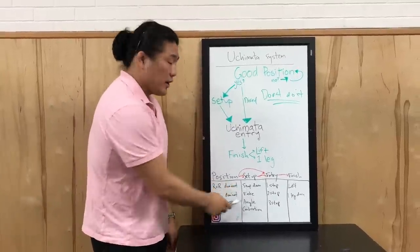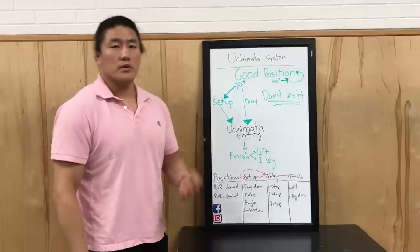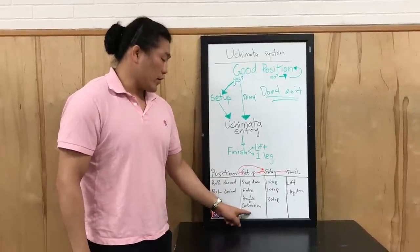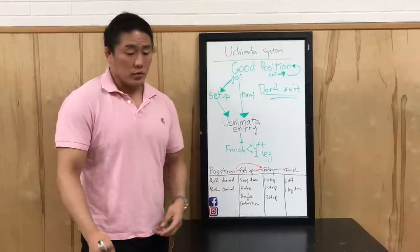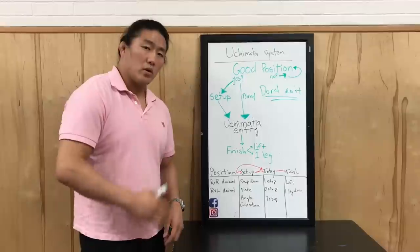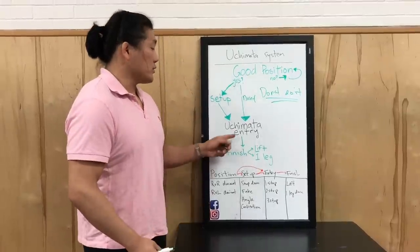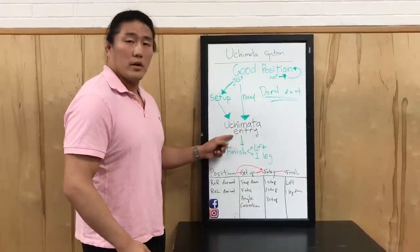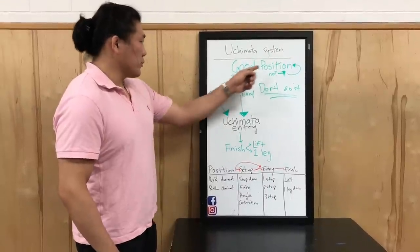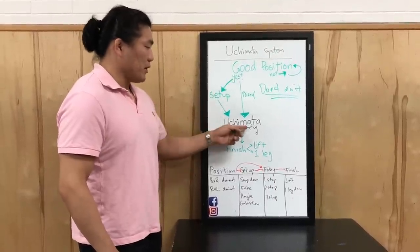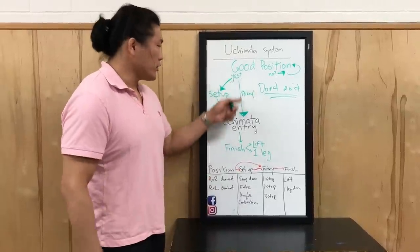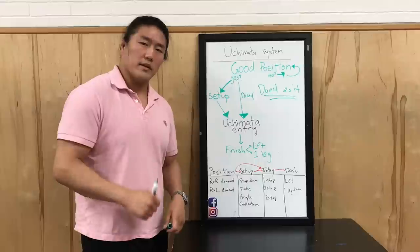There are different types of setups. I like to classify my setups in three ways: snap down, fake, and creating an angle. You could also do a combination. You could do Ko Uchi, O Uchi — the inside trips, outside trips — things like this to parlay your attack into the major powerful turn throw. So with good position, you could do a setup going into Uchimata entry, or you could go straight into a direct attack.